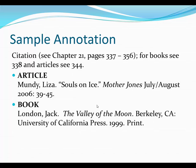For an article citation, for example: you put the last name, first name — Mundi, Lisa — period. The title of the article, "Souls on Ice," period, in quotations. Then the title of the magazine where the article is found — this was found in Mother Jones — the issue it was found in, the July-August issue, and the year it was published, 2006. Colon and the pages where this article can be found, 39 through 45, period. All these periods, quotation marks, and italics — you need to make sure you do everything you're supposed to do.